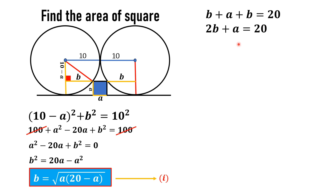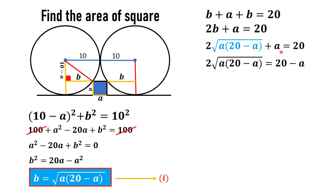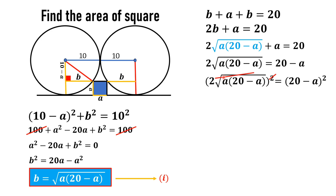Substituting the value of b from equation one into 2b plus a equals 20, and subtracting a from the right side, then squaring both sides of the equation: the 2 becomes 4, and the square root cancels with the square. This simplifies to 4a times (20 minus a) equals (20 minus a) squared.